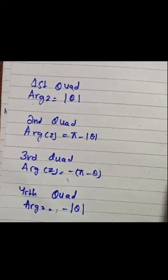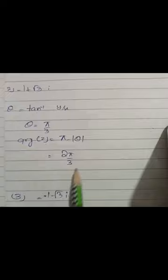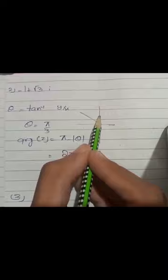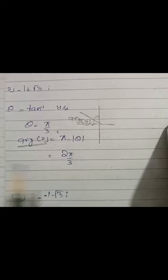We will solve a question. Now the second quadrant question is very simple. We will plot the graph — the point is in the second quadrant and we move anti-clockwise. We put the formula: tan inverse of y upon x. We get theta equals pi by 3. Using the second quadrant formula — pi minus theta — the argument becomes pi minus pi/3, which is the argument for the second quadrant.